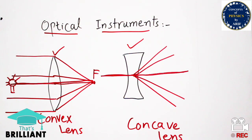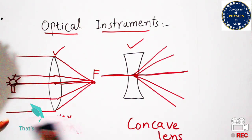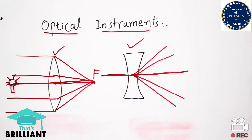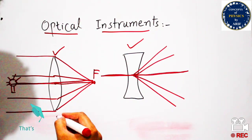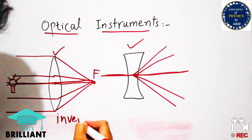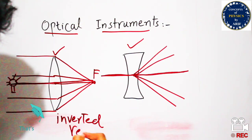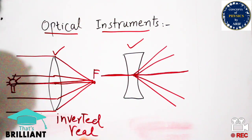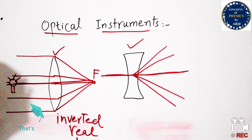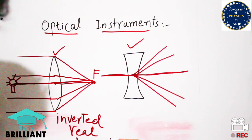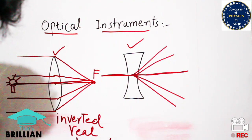When rays of light pass through the convex lens, the image produced is real, inverted, and magnified. In the case of the concave lens, we will see what type of image characteristics are produced after passing through the concave lens. These are the basic properties and characteristics of the convex lens and concave lens.